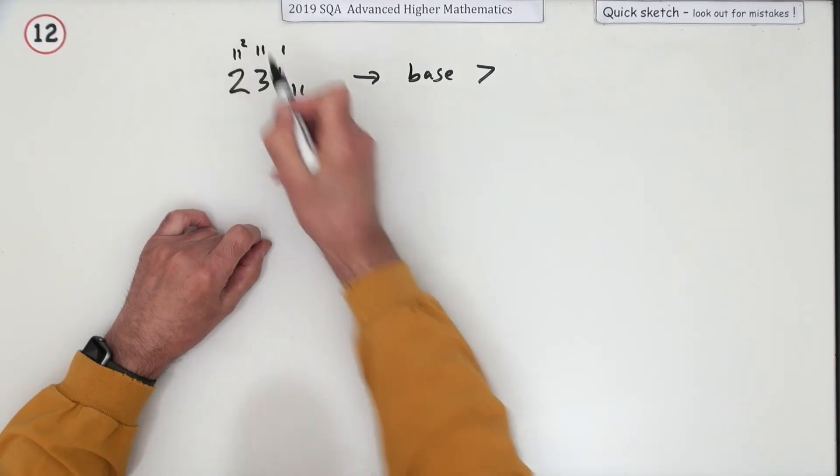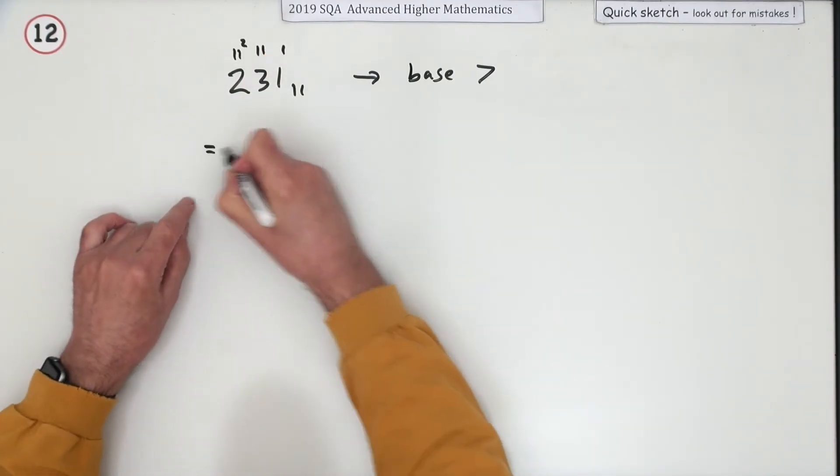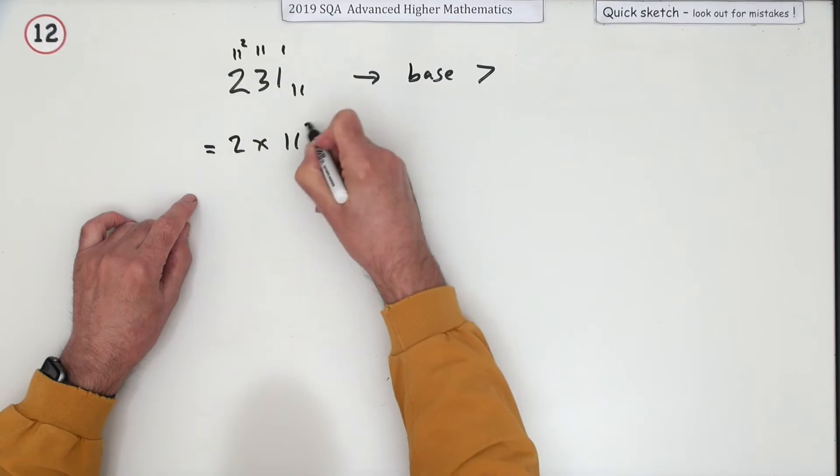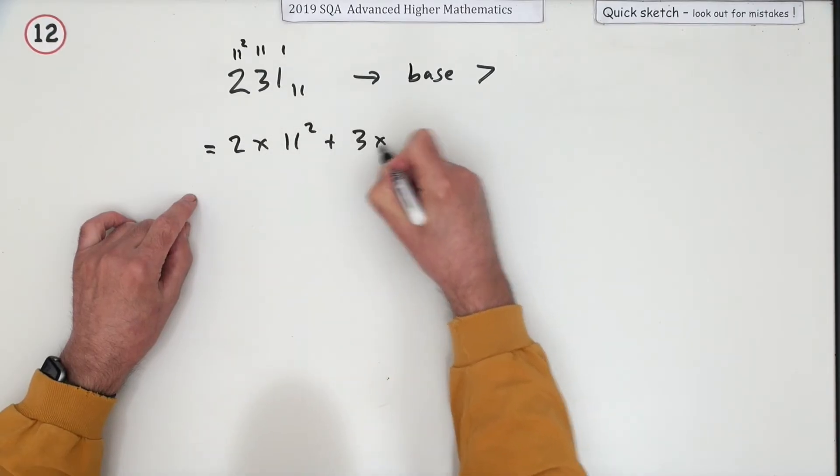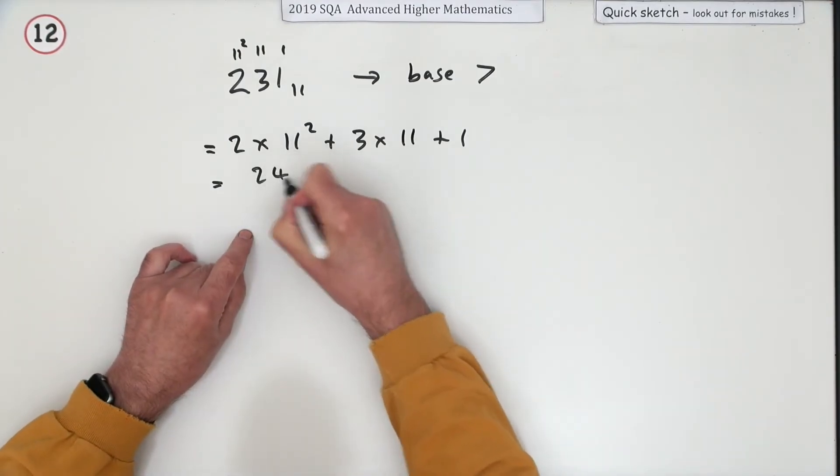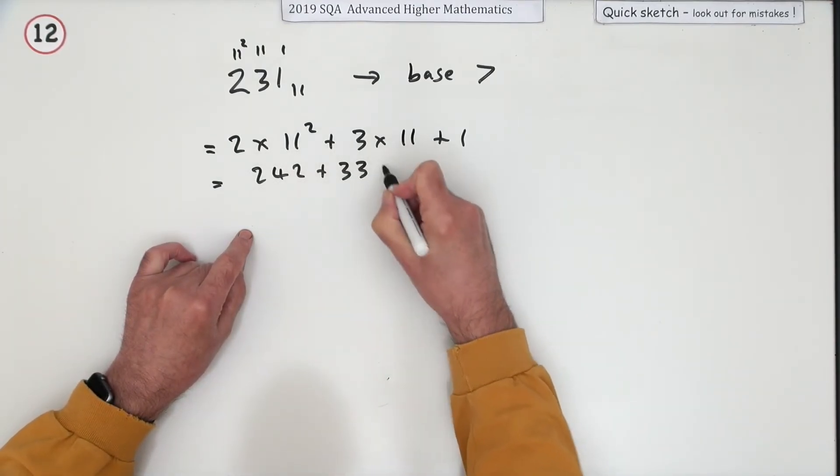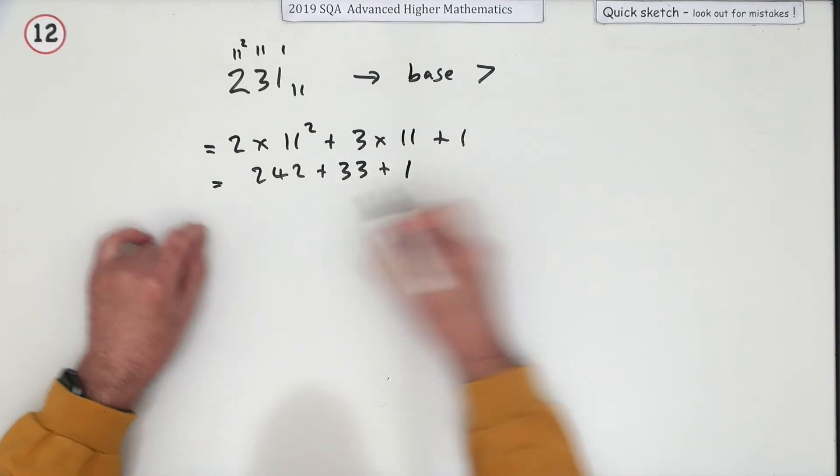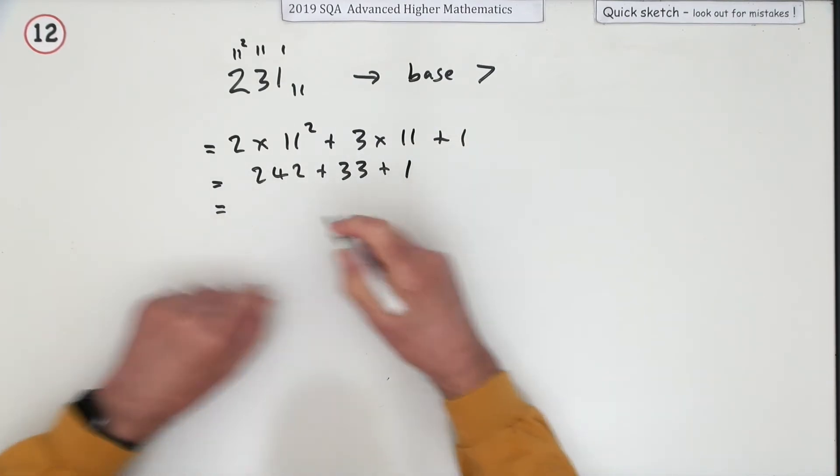All that number means is you've got 2 times 11 squared plus 3 times 11 plus 1. That's 121, 242 and 33 and 1, so that's 276.